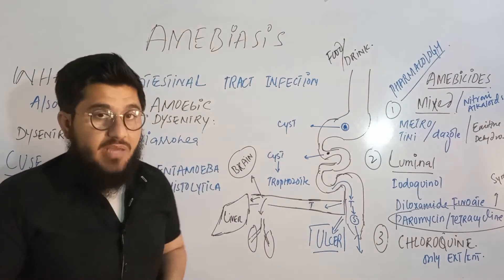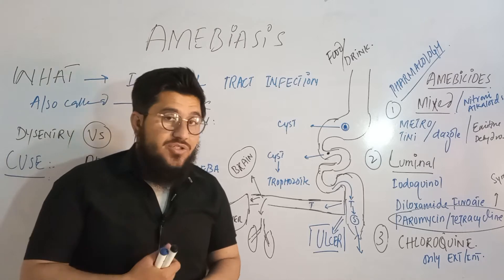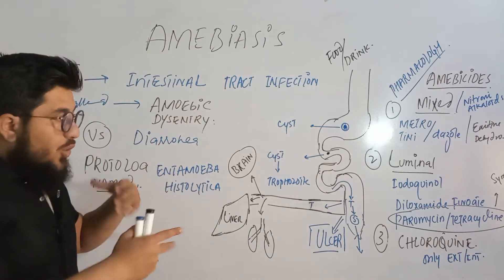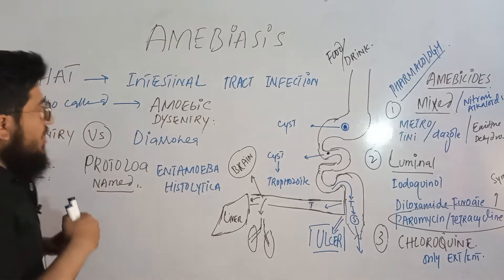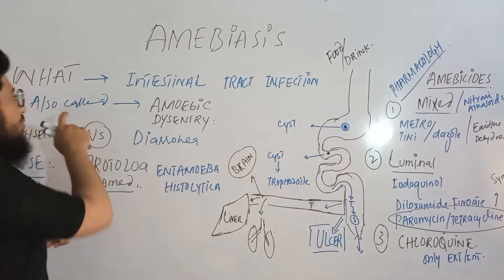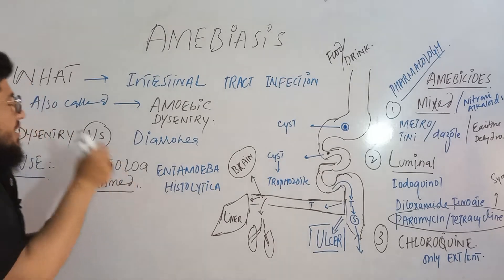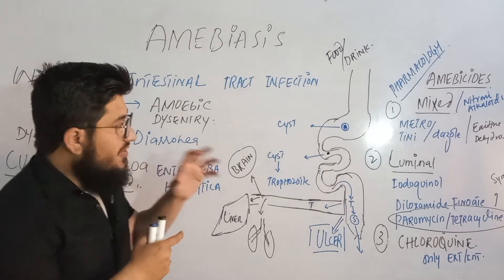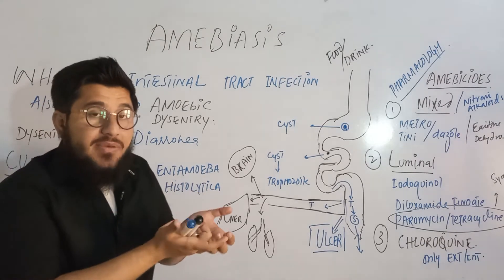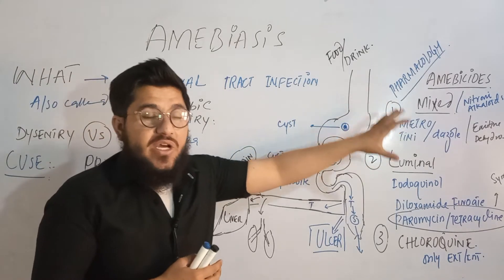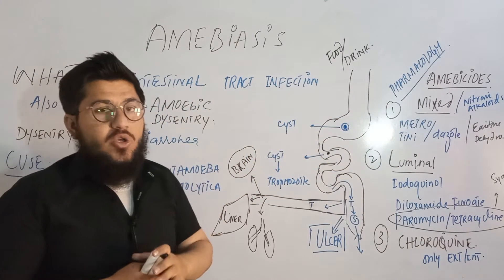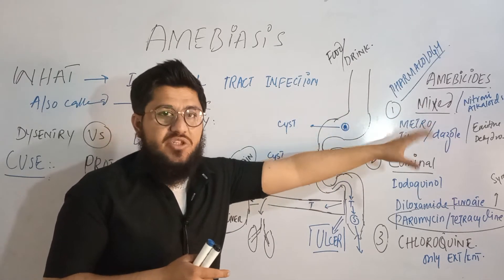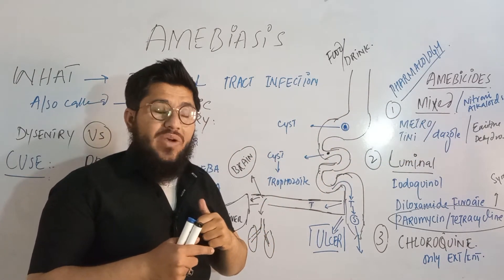The topic under discussion today is MEBS, or amoebiasis. Before getting into the discussion, let me outline the key points: first, what is MEBS; second, its other name; third, the difference between dysentery and diarrhea; fourth, the main cause of MEBS; fifth, how MEBS is caused; and sixth, the drugs used to treat MEBS — that is, the pharmacology of MEBS.